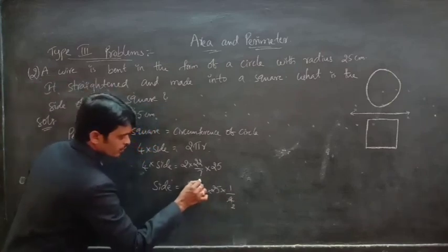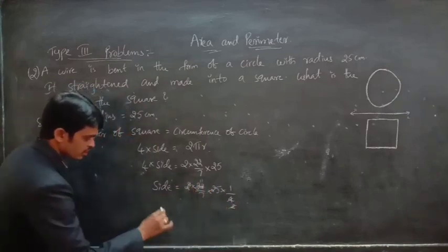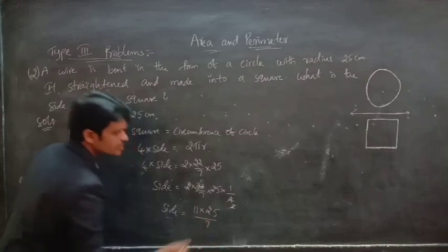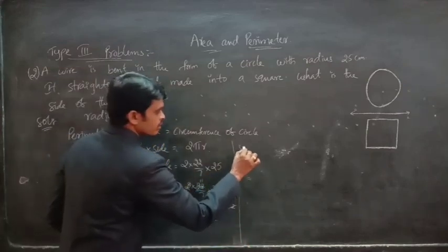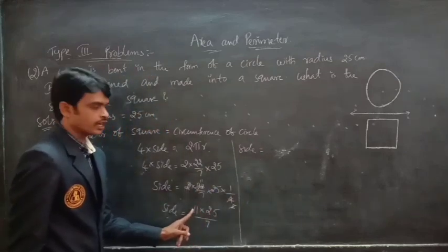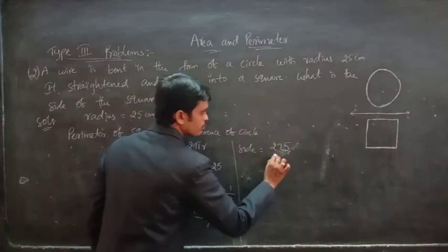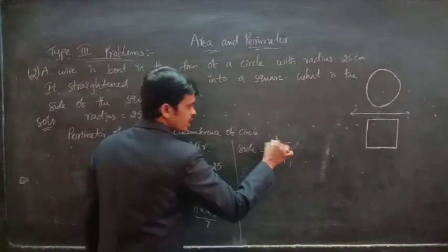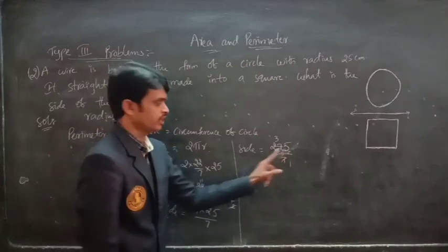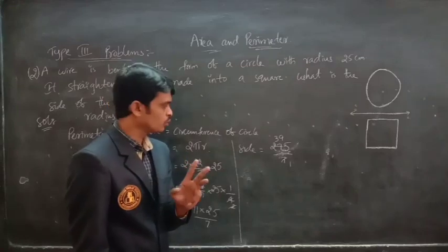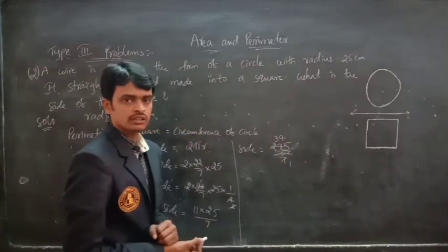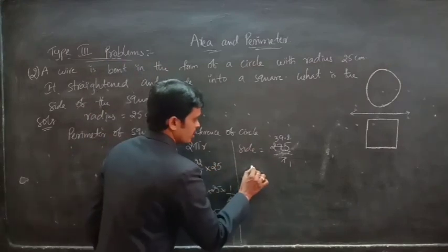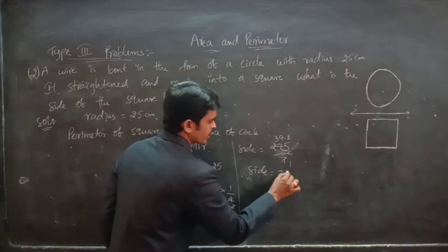Simplifying: the 2 in numerator and the 2 from 4 cancel, giving side equals 11 into 25 divided by 7, which is 275 by 7. Performing the division: 275 ÷ 7 equals 39.2 centimeters. So the side of the square is 39.2 cm.